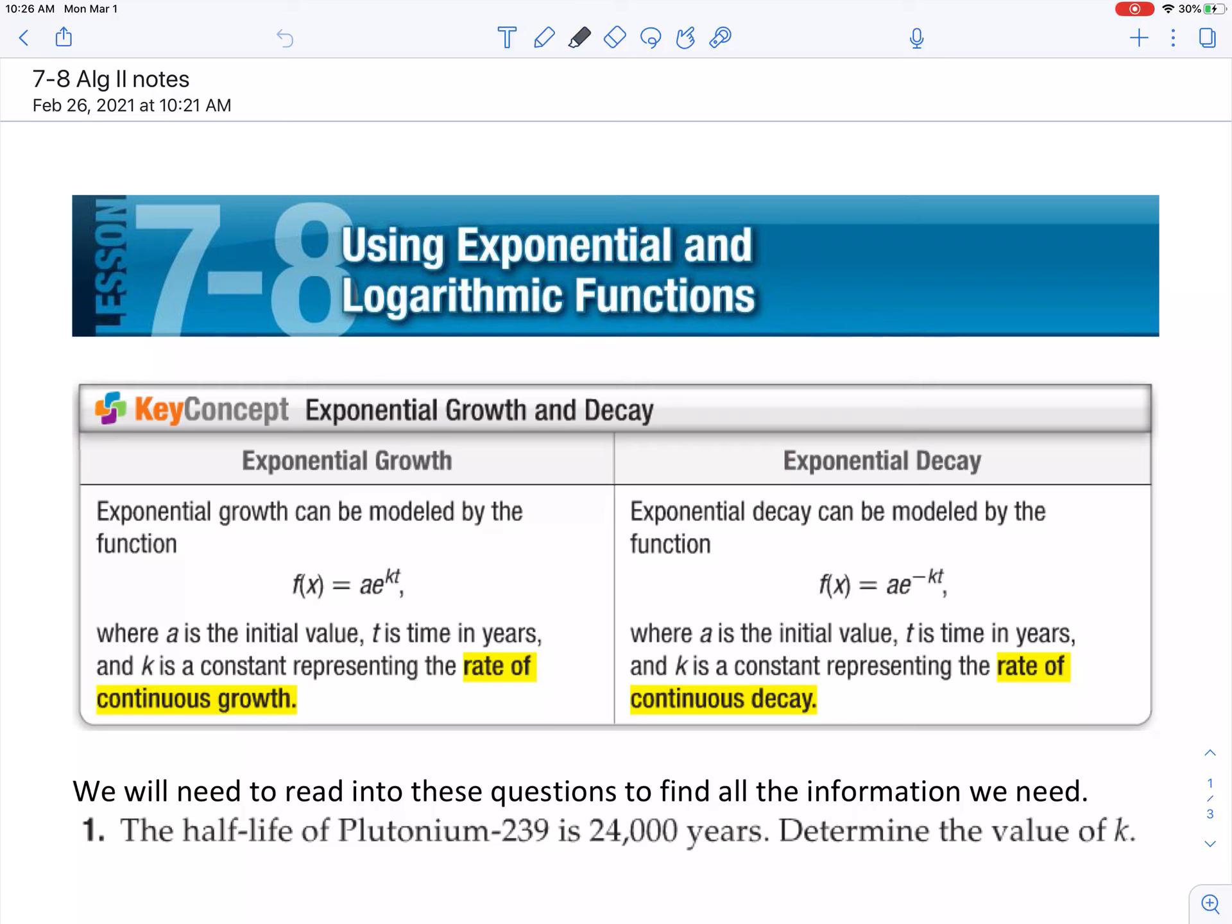even though they're all the exact same thing. Basically, these two up here are what you want to write down: f(x) = a times base e to the kt, or the exact same equation but with a negative k. One representing growth—that's if k is positive—and one representing decay—that would be if k is a negative number.